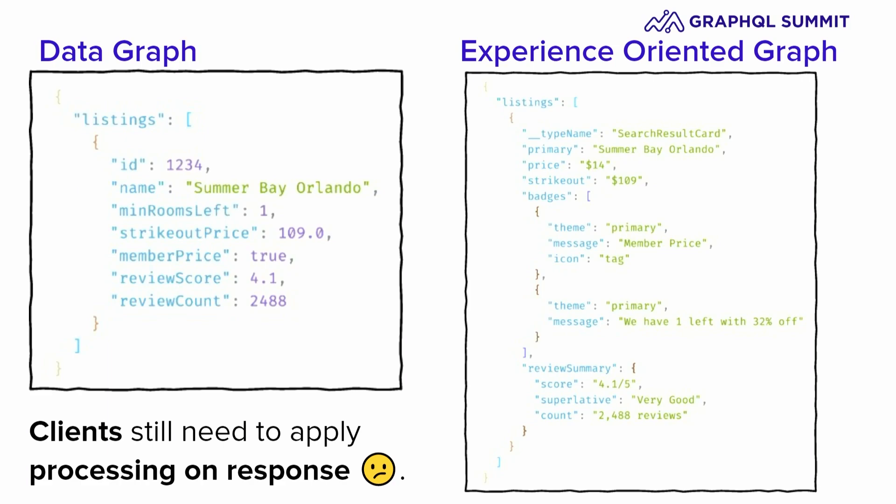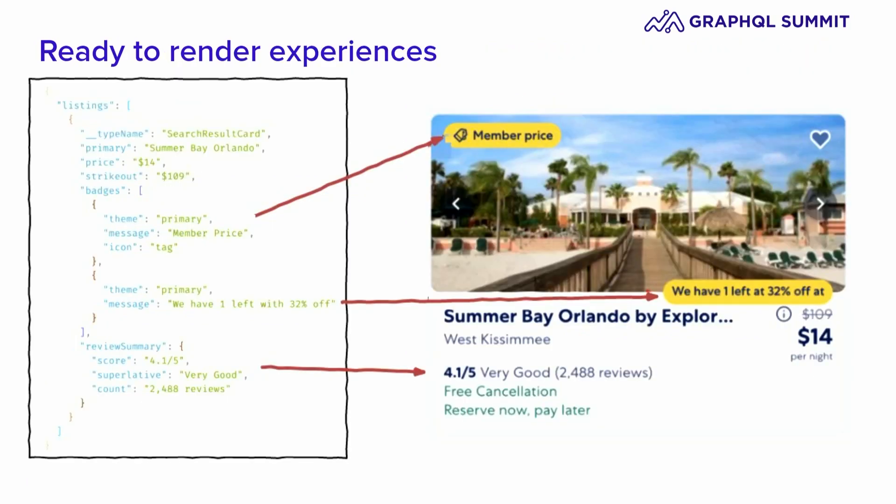In this case, our response is still going to be for product listing results. But as you can see in the response, we are saying that we want to render a search result card. This response contains data that is going to be mapped against the implementation of the design system on clients, making it a minimal effort for clients to make the query and then just map the response against the domain types.